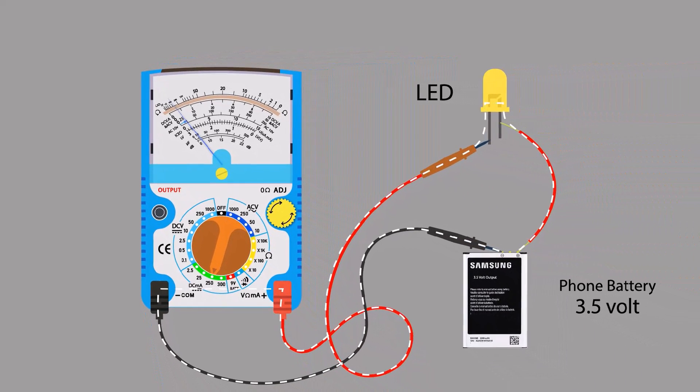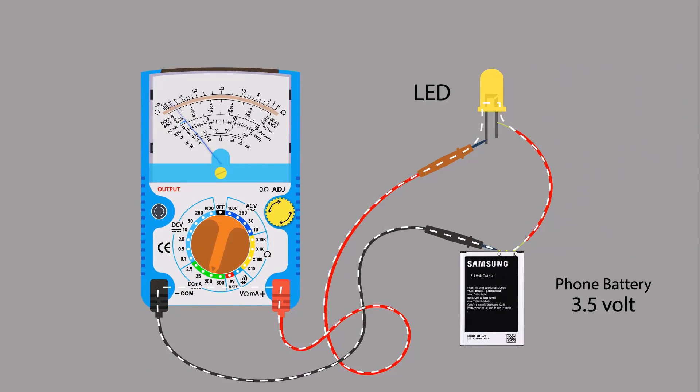Always connect multimeter in series of circuit to measure current. This is how we can measure DC current.